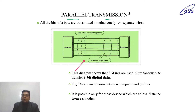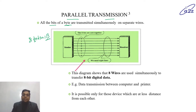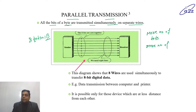Parallel transmission. All the bits of a byte are transmitted simultaneously on separate wires. A byte is a collection of bits — eight bits make one byte. This means more number of bits requires more number of wires. So if we are sending eight bits, then eight wires are used. If we send 64 bits, then 64 wires will be used.